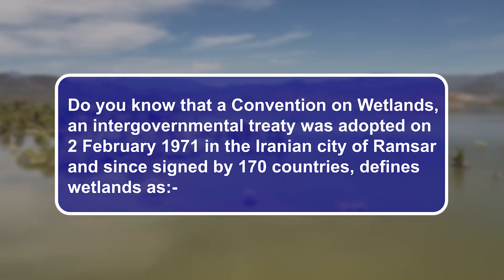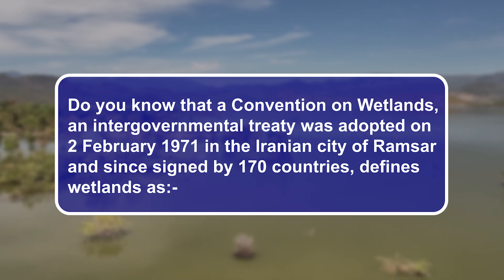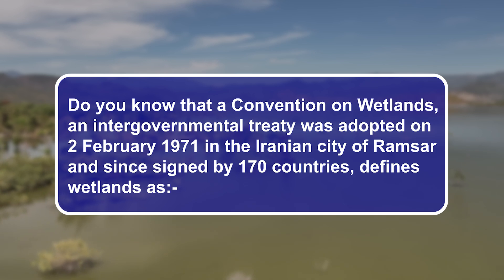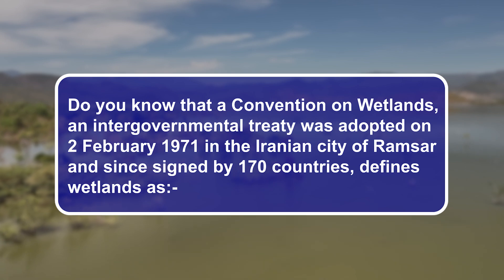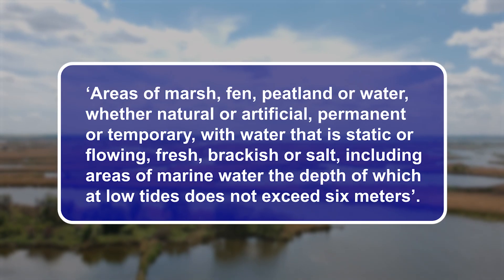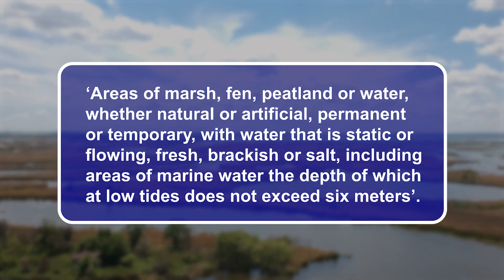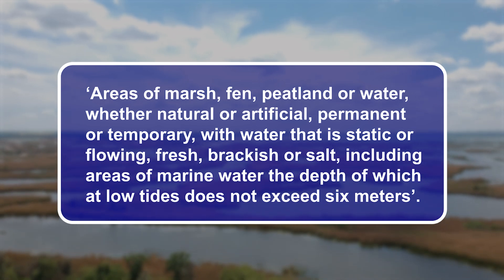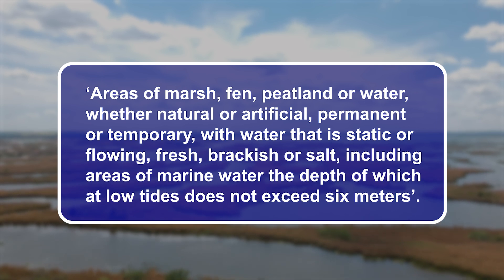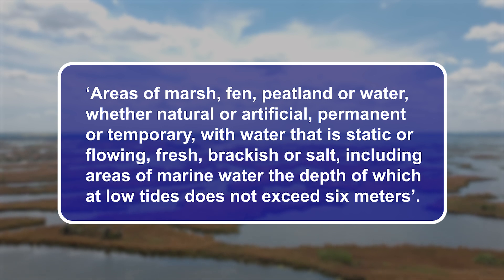A Convention on Wetlands, an intergovernmental treaty, was adopted on 2nd February 1971 in the Iranian city of Ramsar and has since been signed by 170 countries. It defines wetlands as areas of marsh, fen, peatland or water, whether natural or artificial, permanent or temporary, with water that is static or flowing, fresh, brackish or salt, including areas of marine water the depth of which at low tides does not exceed 6 metres.